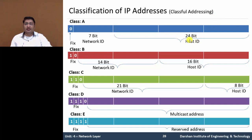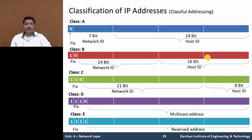Similarly, in Class B, the first 2 bits of the first octet are fixed as 1 and 0. The remaining 14 bits form the Network ID, and the other 16 bits are the Host ID.